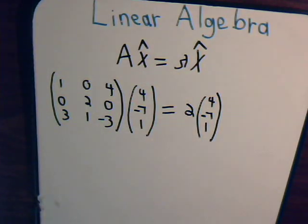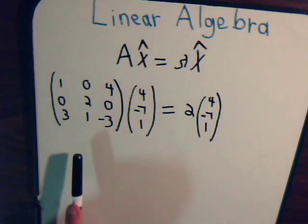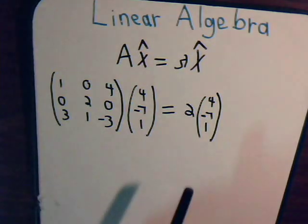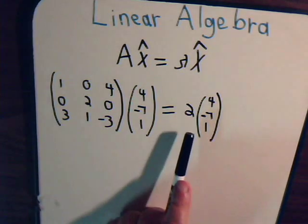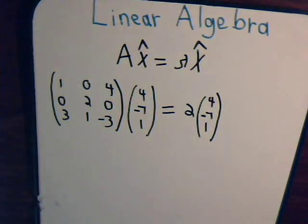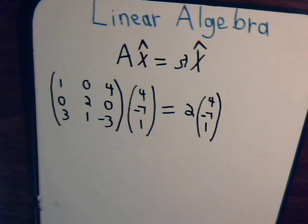Obviously, with every vector we multiply by this matrix, we're not going to end up with just some multiple of that vector. There are only certain ones that it works for. These special vectors are called the eigenvectors of the matrix, and the constant they end up being multiplied by is called the corresponding eigenvalue. So the question is: if we have a given matrix, how can we find out what its eigenvectors are, if it even has any?